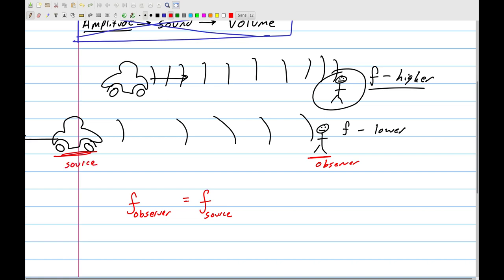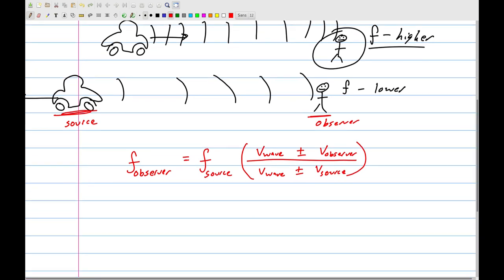This is going to be not quite equal when they have things moving. We're going to have a big fraction that this is multiplied by. And on the top, it's going to be the velocity of the wave. Actually, on the bottom, it's also the velocity of the wave. And then each of them has a plus or minus. On the top, it's the velocity of the observer. And on the bottom, it's the velocity of the source.